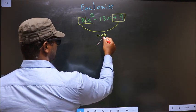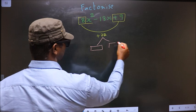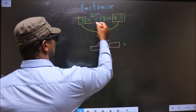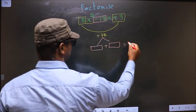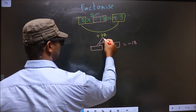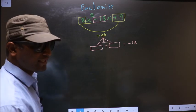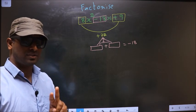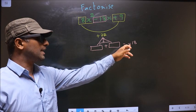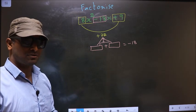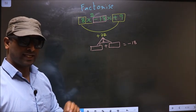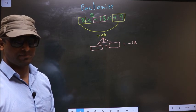Now you should look out for two numbers such that when you add them, you should get the middle coefficient, that is minus 18, and when you multiply them, you should get plus 72. I repeat: you should look out for two numbers such that when you add them, you get minus 18, and when you multiply them, you get plus 72. To get those two numbers, we should take LCM of 72.